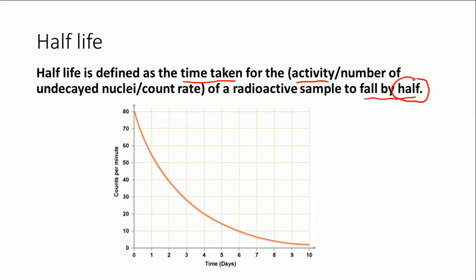So it can either be activity, number of nuclei, or count rate — it's the time taken for that quantity in the radioactive sample to fall by a half. Half-life is actually measured in seconds. Here is a half-life curve which you may remember from GCSE studies. We've got the counts per minute on the y-axis and the time in days on the x-axis. So in this case we're looking at the actual count rate of the sample rather than the activity or the number of nuclei.